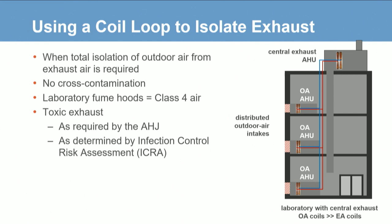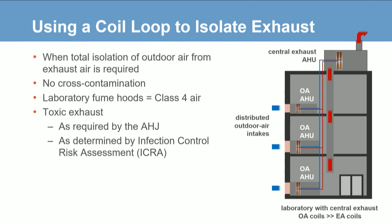The primary advantage of a coil loop is that the exhaust outlets and outdoor air intakes do not need to be near each other. For most laboratories, there will be outdoor intakes spread across the building and various sized outdoor air handlers alongside one central exhaust air handler. The heat exchanger transferring energy from the exhaust air to the outdoor air does not come in contact with the exhaust air — applicable where isolation is required by industry ventilation standards or wherever there is toxic exhaust as determined by the local authority having jurisdiction.